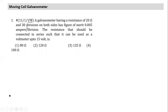This is a question from January 2019 exam. A galvanometer has a resistance of 20 ohms, with 30 divisions on both sides. A galvanometer with divisions on both sides can work in either direction — we don't have to worry about polarity.